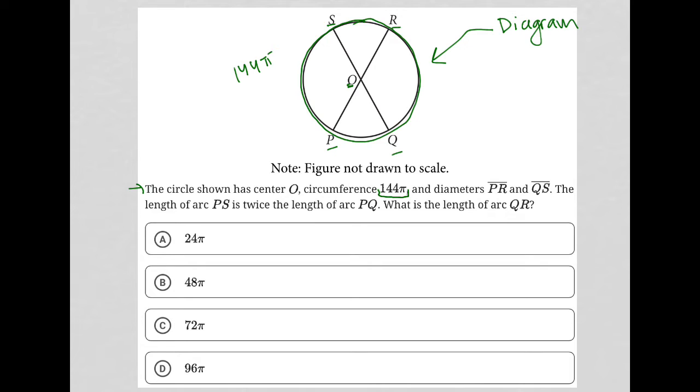Now, what else do we know? Given where these lines are, I also know, right, since O is the center, that from S to Q is half a circle, right? That's half of a circle. That's half our circumference, which means all of this is 72π. Just to try to keep clear here, I'll use blue. S to Q this way is also 72π, right, because we want it to add up to 144π.